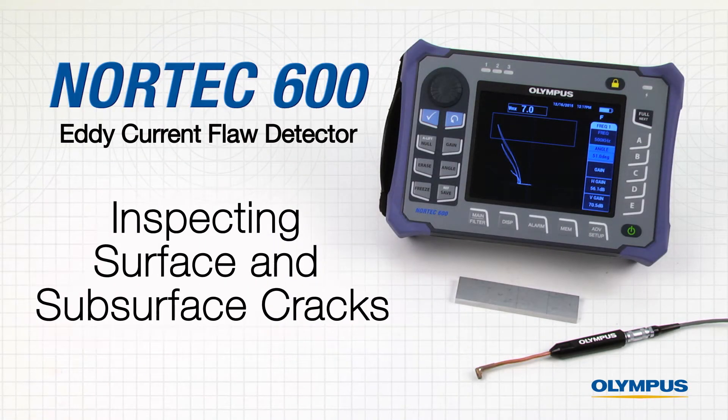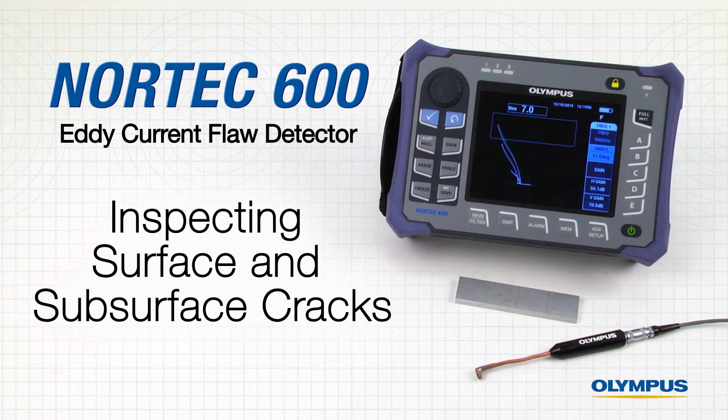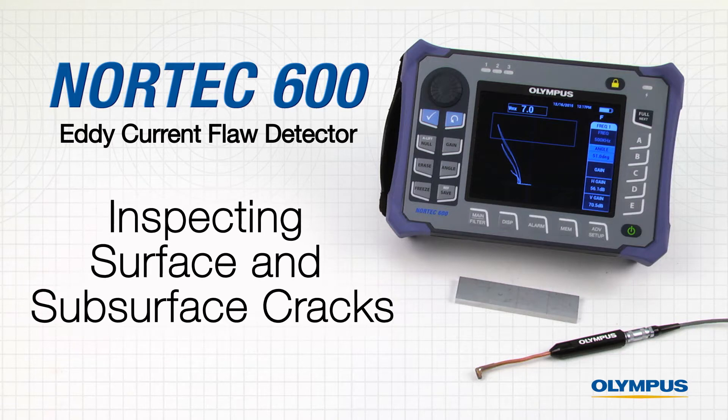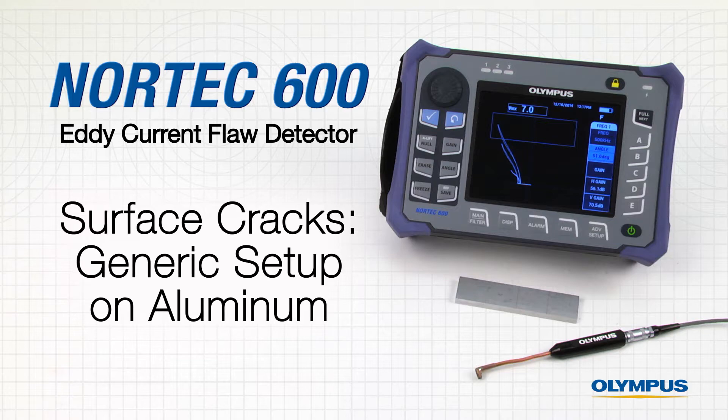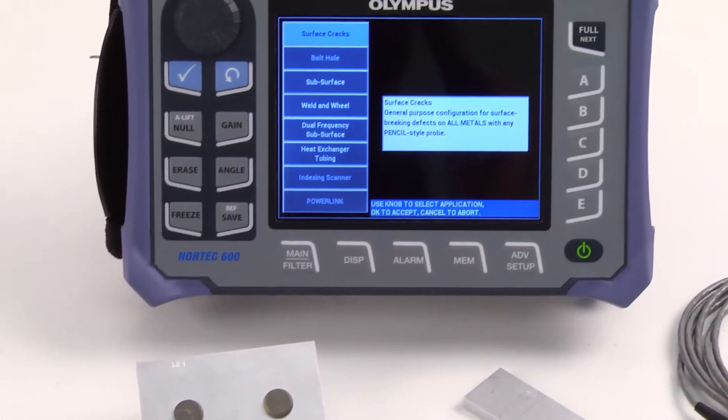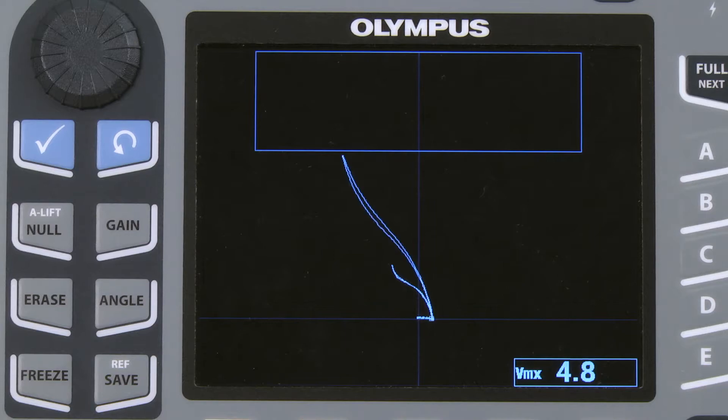This video will demonstrate how to configure the Nortec 600 for surface and subsurface inspections. The Nortec 600 can be configured in various ways. The following method is the fastest way to obtain good signals and consistent results.